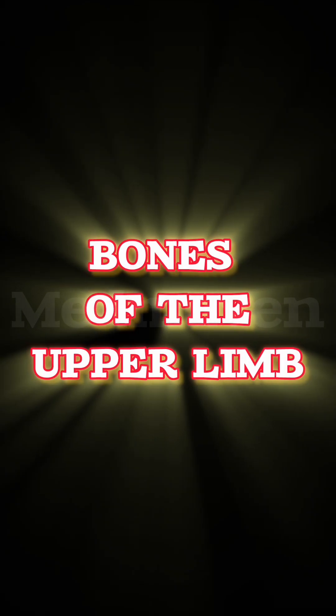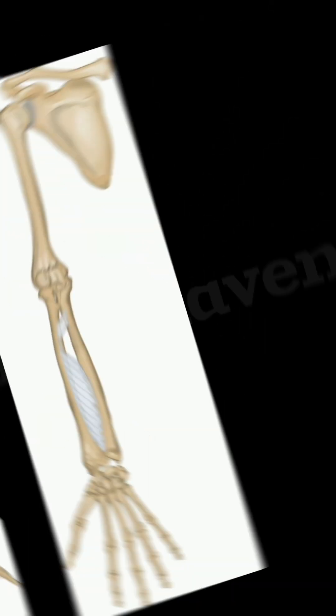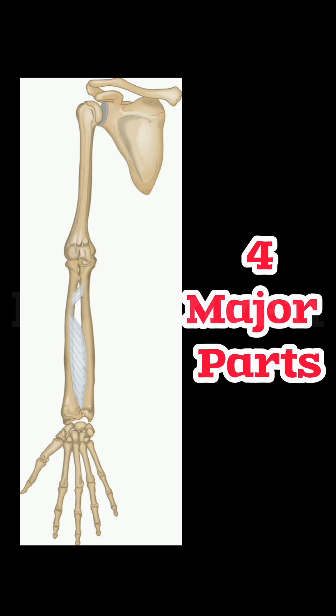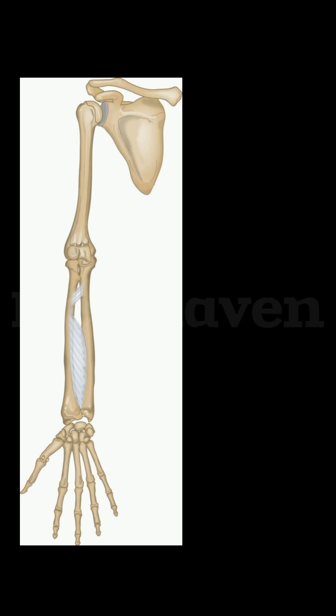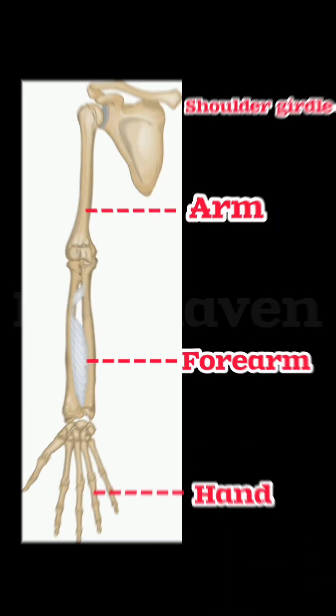Bones of the upper limb in a super simple way. The upper limb has four major parts: shoulder girdle, arm, forearm, and hand.